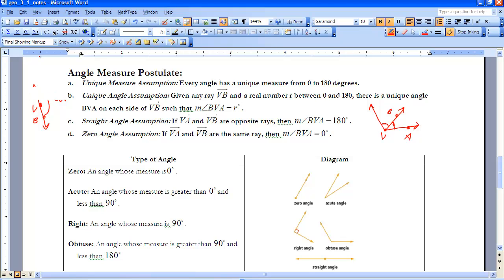And a zero angle assumption is if I have a ray on top of a ray. So here, endpoint V, because that would be our vertex, so that means I'd have point A on this ray and point B. So that means that there is no space in between. It's a ray on top of a ray, so that means it would have zero degrees.